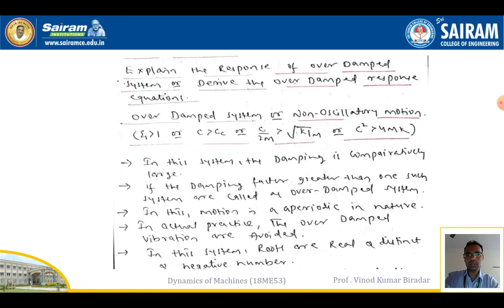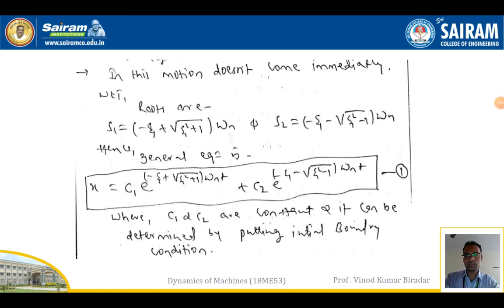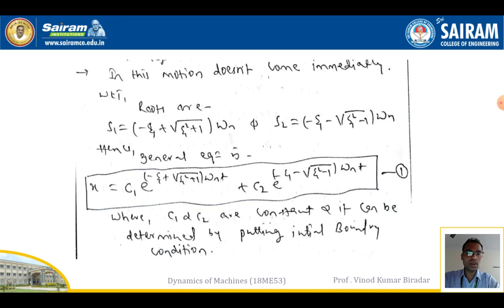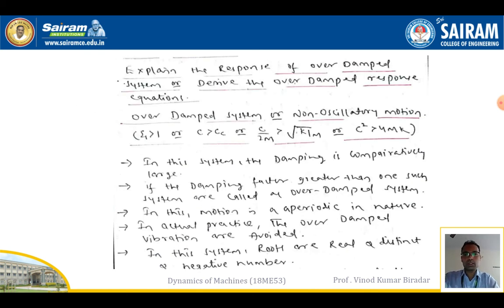This is an expression for the overdamped system equation — non-oscillatory motion. This is very important for examinations on overdamped, underdamped, and critically damped systems. Remember the procedure: know the roots, understand the general solution, apply boundary conditions, differentiate, substitute values to get C1 and C2, and substitute into equation 1 for the final equation of motion. I hope you understand. Thank you very much.